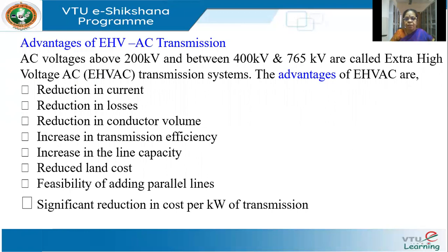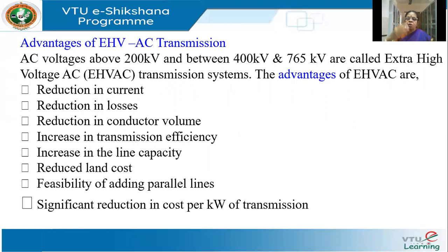The advantages of EHV AC — voltages between 400 to 765 kV — are the same as we saw for high voltage in general: more reduction in current and losses, reduction in conductor volume, increase in transformer efficiency, reduced line cost, increase in line capacity, feasibility of adding parallel lines, and significant reduction in cost per kilowatt of transmission. The conductor cost comes down, efficiency improves, land cost comes down, and installation cost comes down.